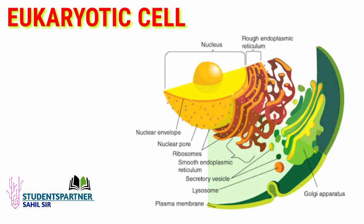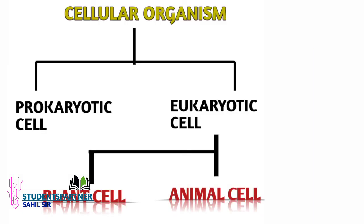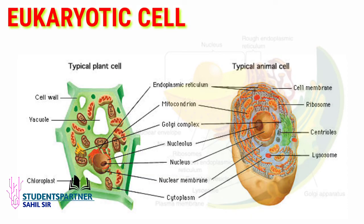Eukaryotic cells are divided into two parts: plant cells and animal cells. There are some differences between them — for example, cell wall is found in plant cells but not in animal cells. Animal cells only have a plasma membrane, while plant cells have both a cell wall and a plasma membrane. Eukaryotic cells are larger in size compared to prokaryotic cells.